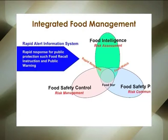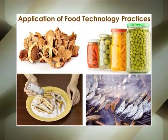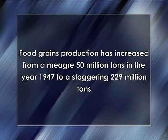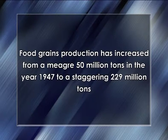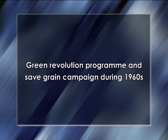Number second, integrated food management for storage, transportation and distribution. Number third, application of food technology practices for processing traditional foods by way of drying, pickling, salting and smoking. The food grains production has increased from a meager 50 million tons in 1947 to a staggering 229 million tons today. India stands almost third in the world in food production with about 601 million tons today, which is almost comparable to that of the US. This progress was facilitated by the government's green revolution program and save green campaign during the 1960s.